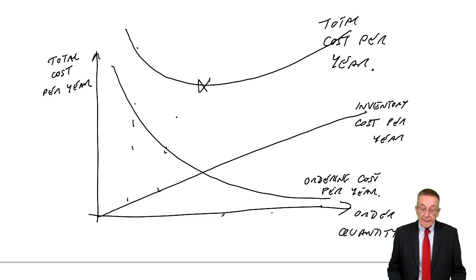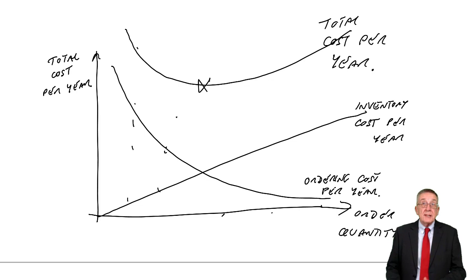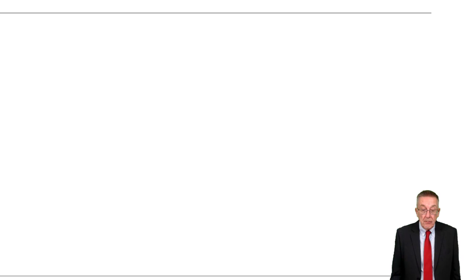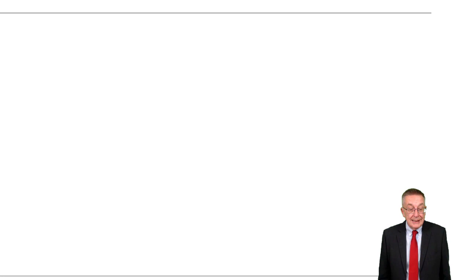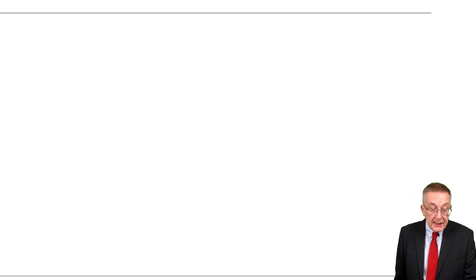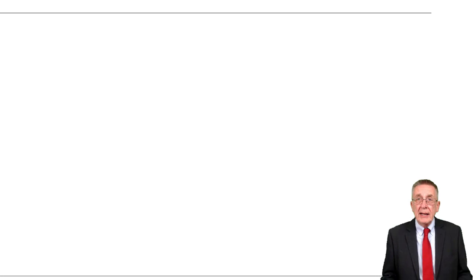That was just explaining where we're going. Look at example one on the next page. Yanis has demand for 40,000 desks per year. The purchase price of each desk is $25. There are ordering costs of $20 for each order placed, and inventory holding costs will be 10% of the inventory value. We are asked to calculate the inventory costs per year for the following order quantities and plot them on a graph. In the exam, you won't be plotting them on a graph, but you are expected to be able to do the costings.